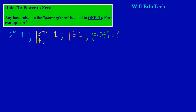Now let's look at the intuition — the idea behind why a base raised to the power of zero equals one. In example one, let's consider three squared divided by three squared.